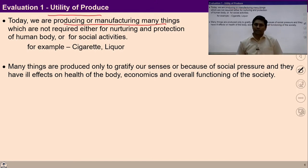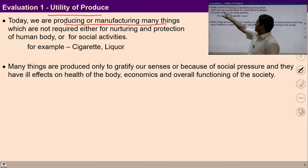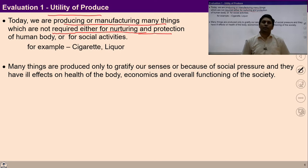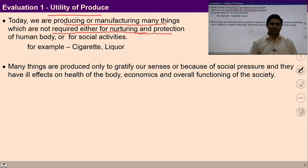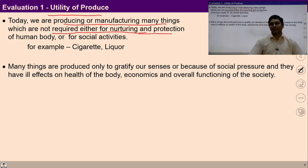We studied that physical facilities are required to be produced for nurturing, protection, and right utilization of the body. In that context we are evaluating the present production processes. If the produced things in the prevalent societal system are not nurturing and protecting the human body, or not facilitating any social activities, then many people are engaged in production processes that are actually damaging the body and harming society.